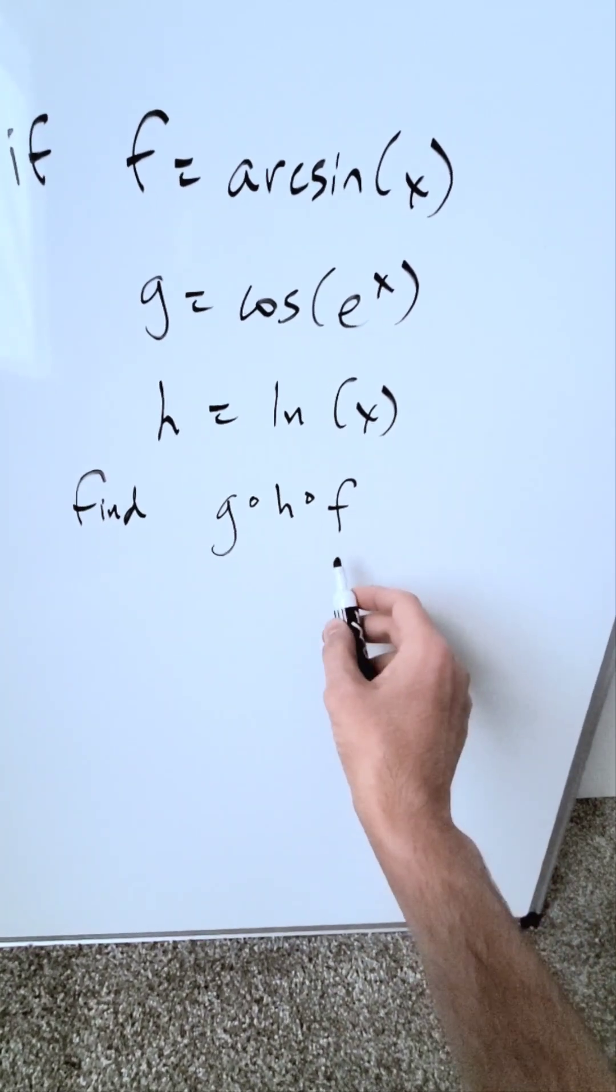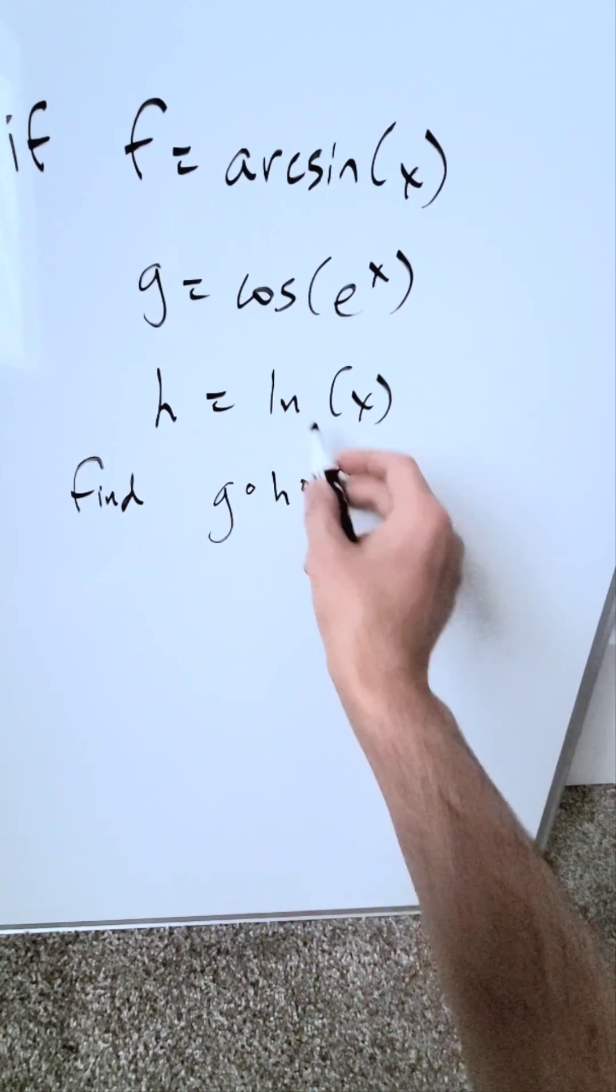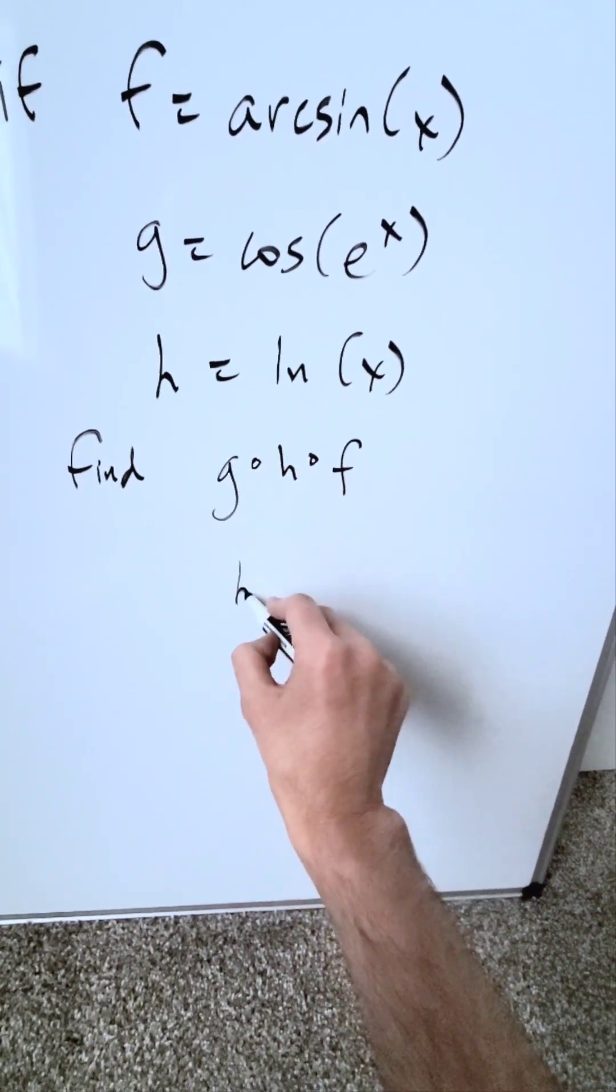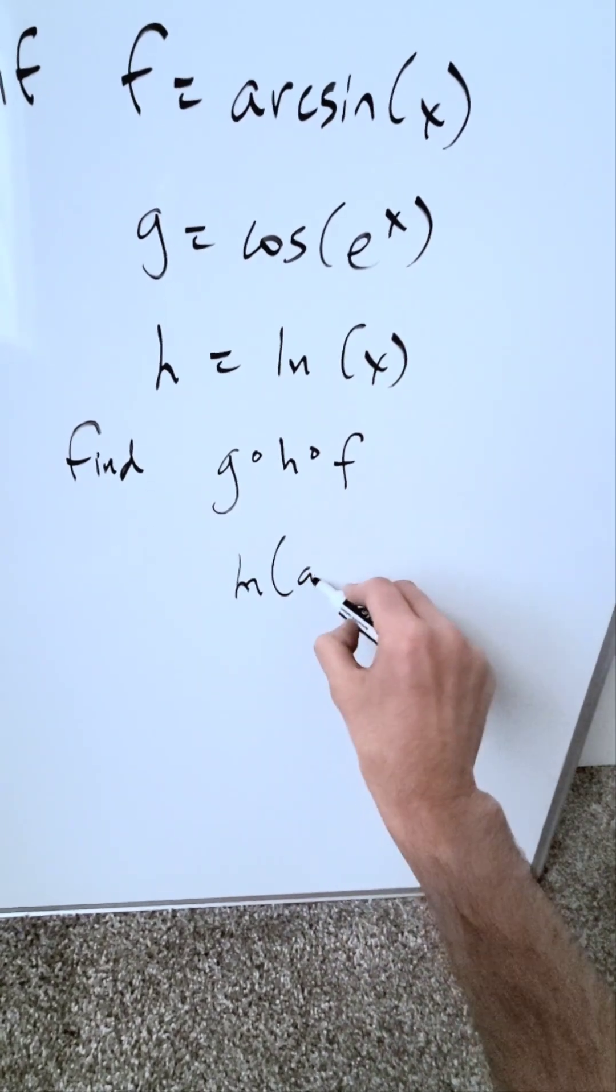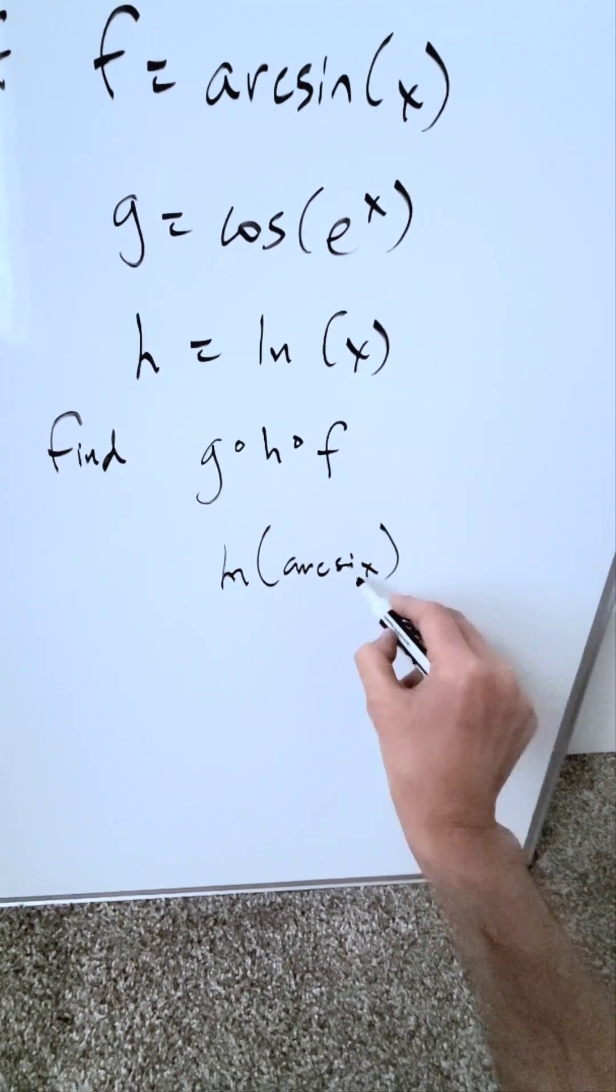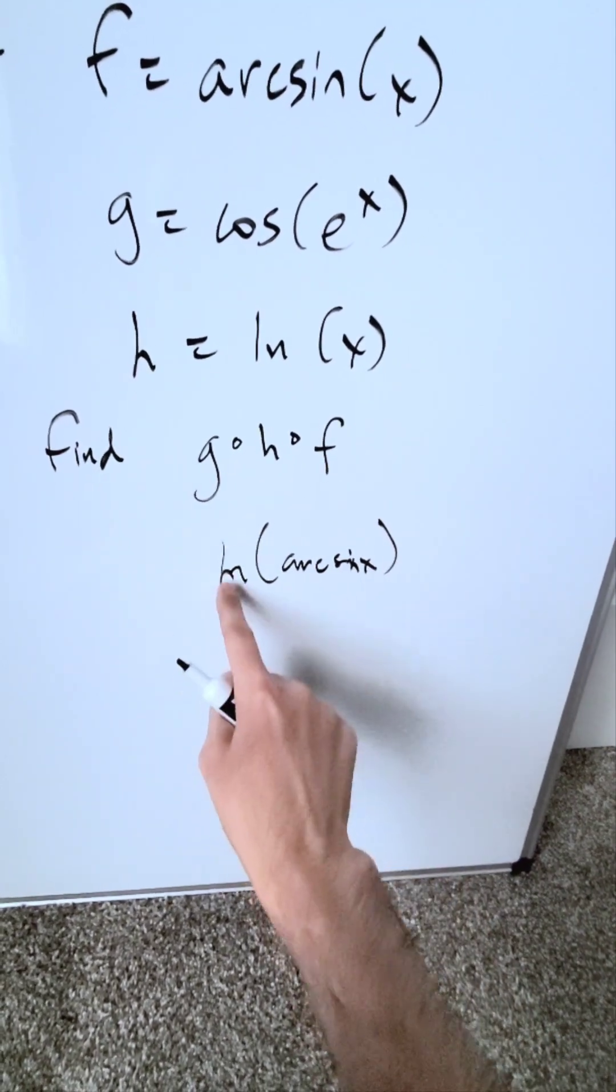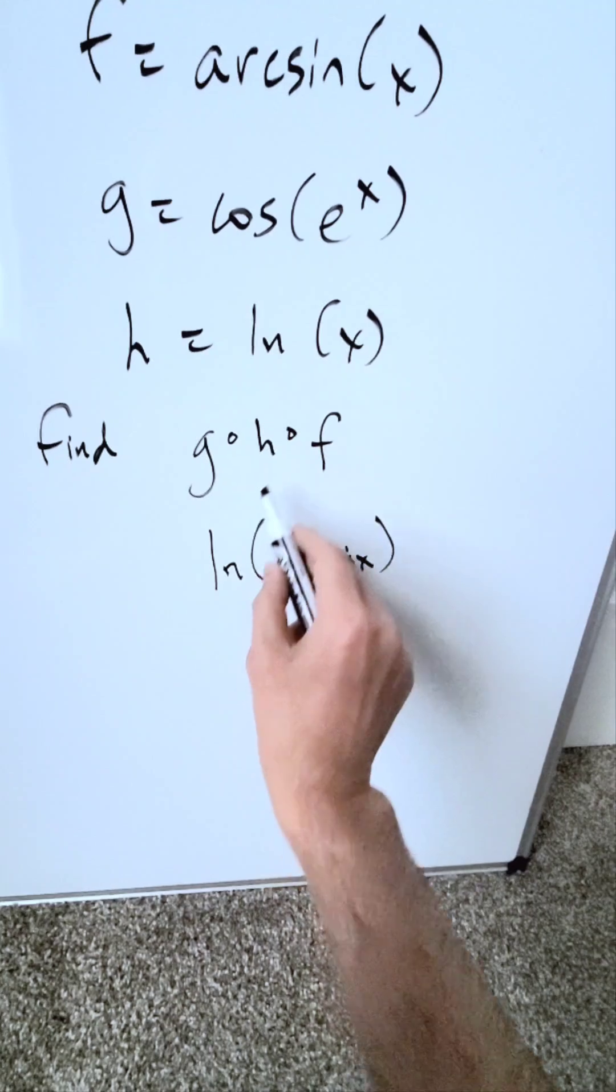Just look at it in exactly the same way as you're seeing it. In the h function, in place of x, I have arcsin(x). This represents the f function having come into the h function, h∘f.